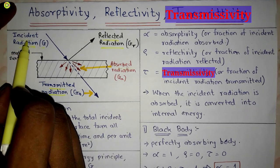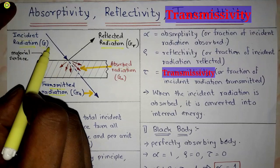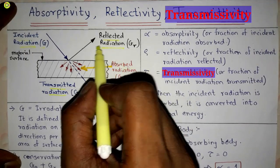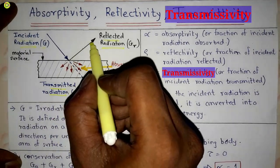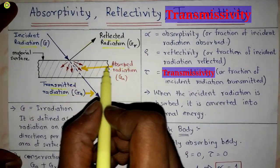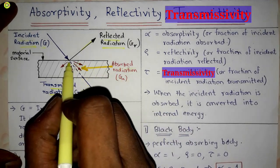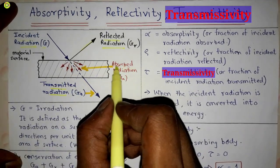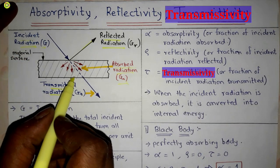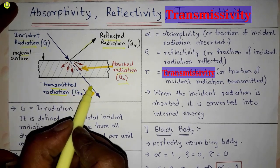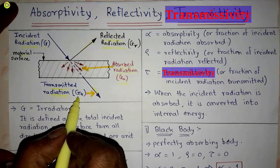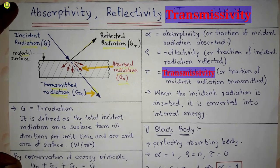When the incident radiation falls on the material surface, part of it is reflected — this is reflected radiation G_r. Part of it gets absorbed — this is absorbed radiation G_a, shown by the red arrows. And part of the incident radiation gets transmitted through the material surface — this is transmitted radiation G_t.